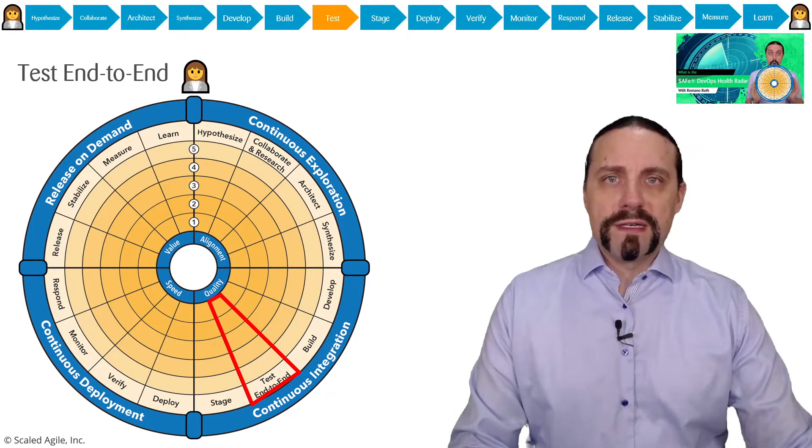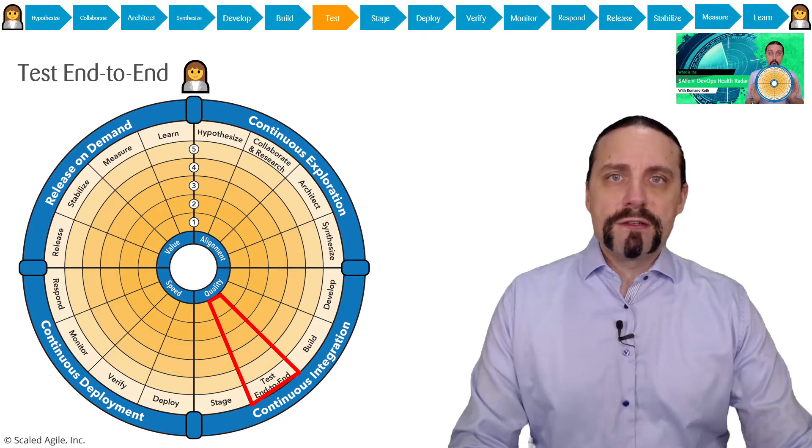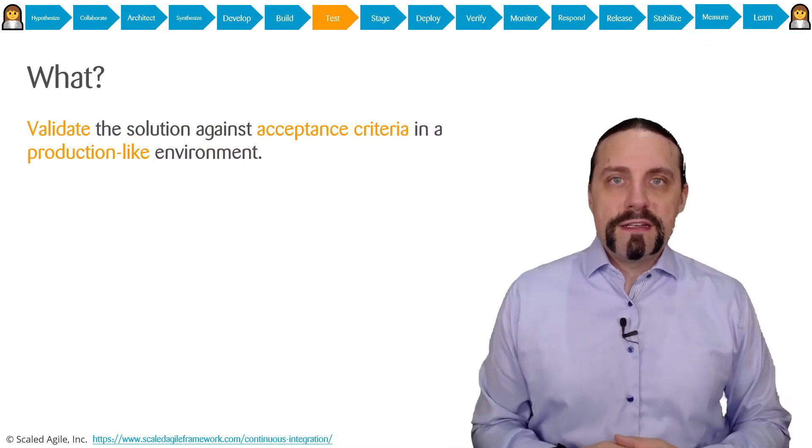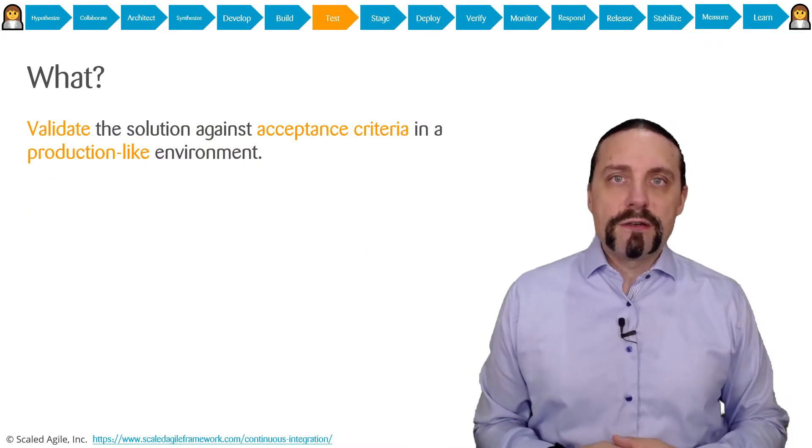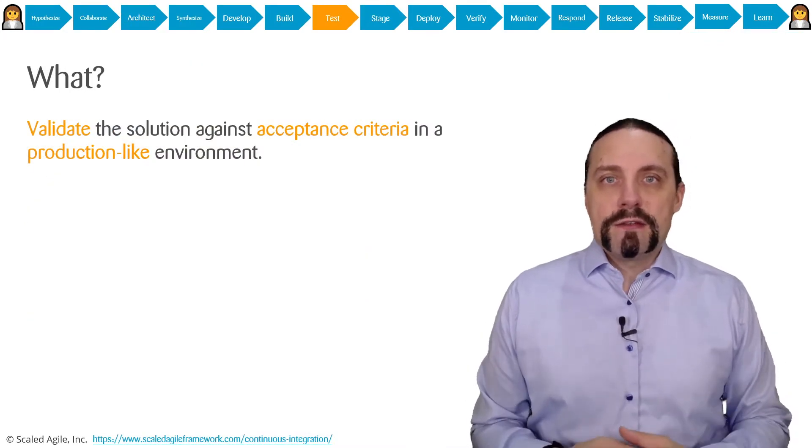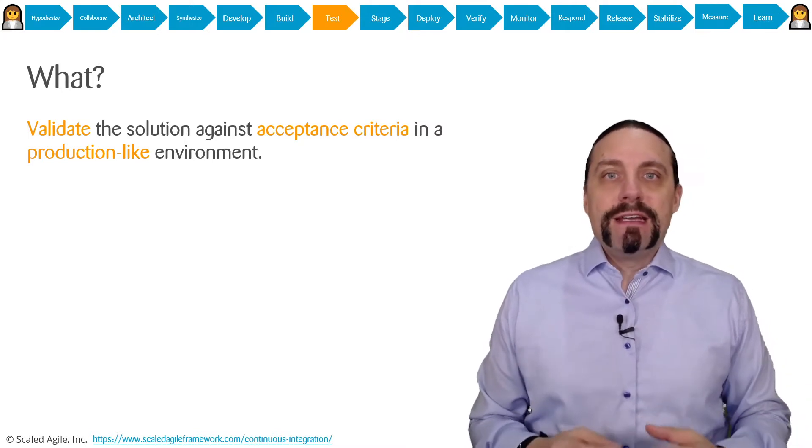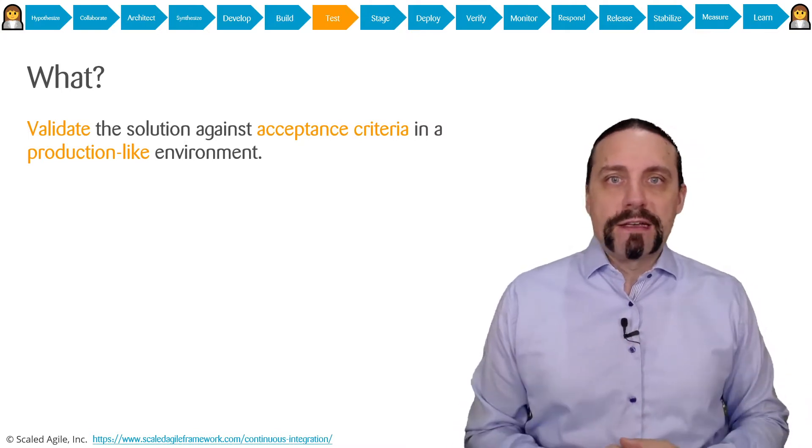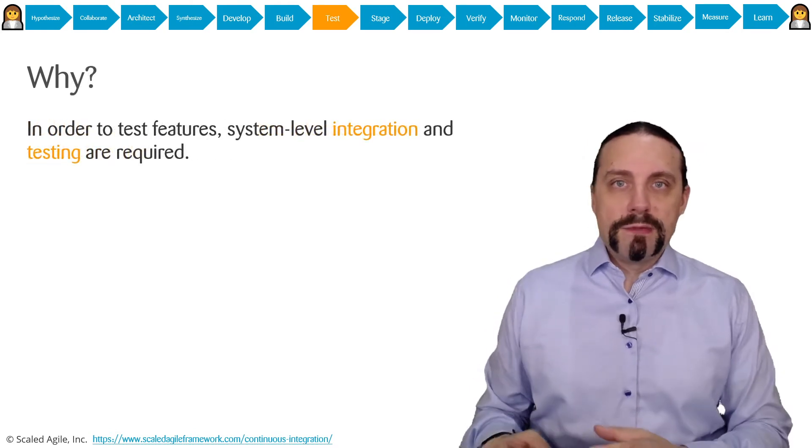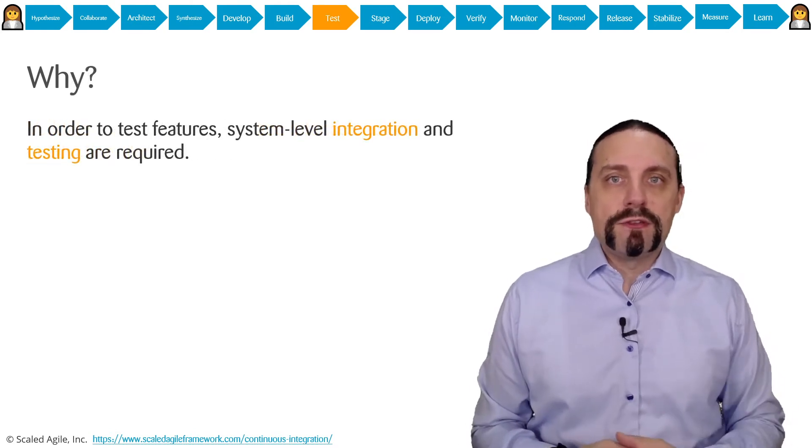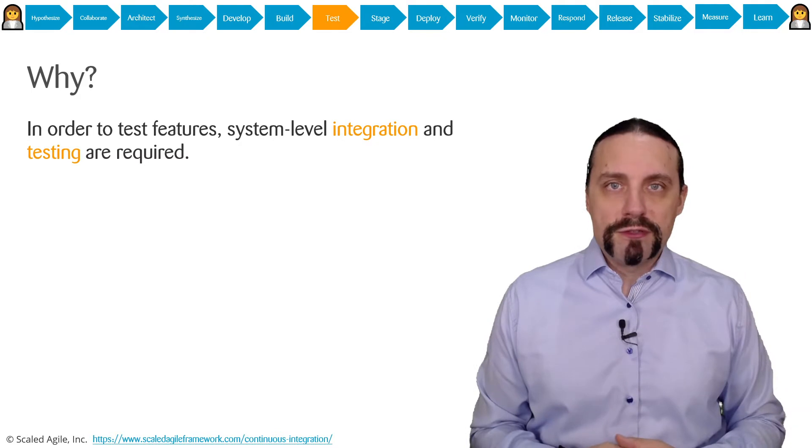The output of the build step is a deployable artifact which we are now going to test end-to-end. In the test end-to-end step we validate the solution against the acceptance criteria in a production-like environment.